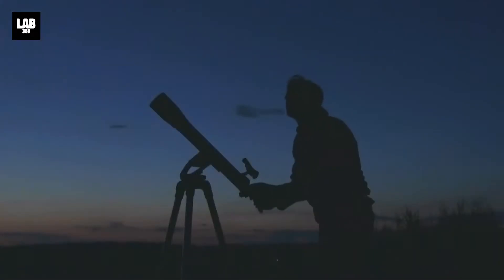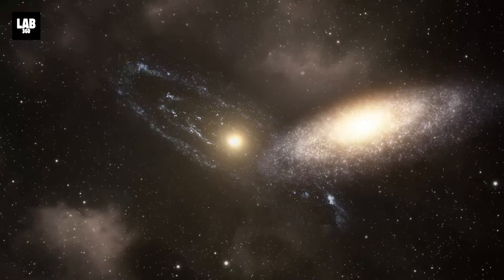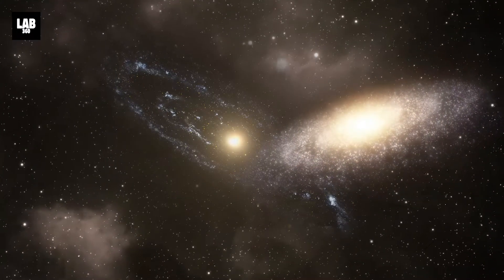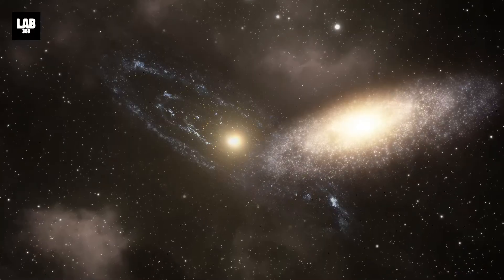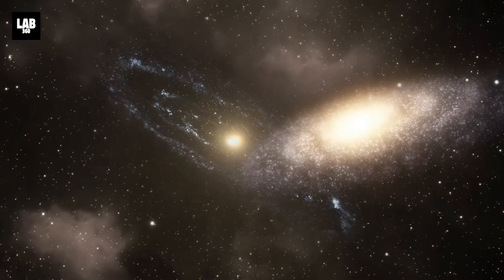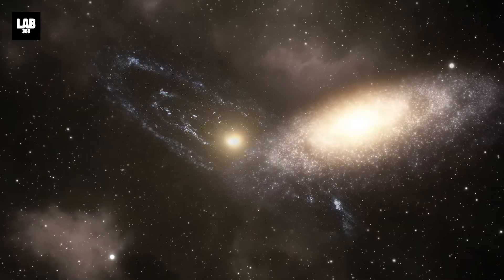So how do scientists predict what would happen a billion years from now? Scientists create models of the two galaxies using currently observed data, and then play out the model or simulation like a movie to see what would happen billions of years from now.